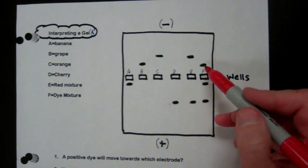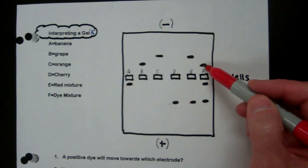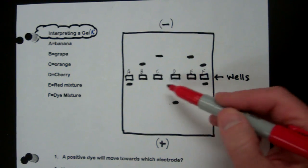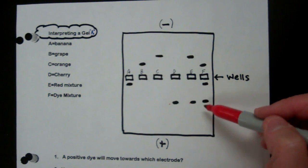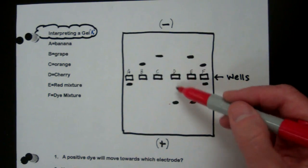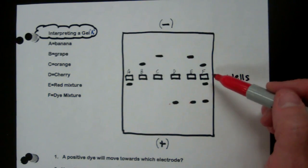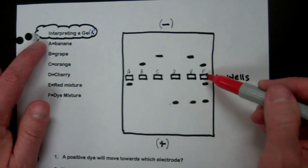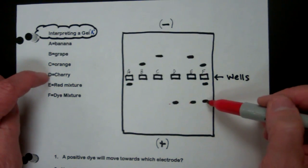Well, it looks like B is in it. What is B? Grape. So the F mixture, the dye mixture, has grape and banana, and what's D? Cherry. So grape, banana, and cherry.